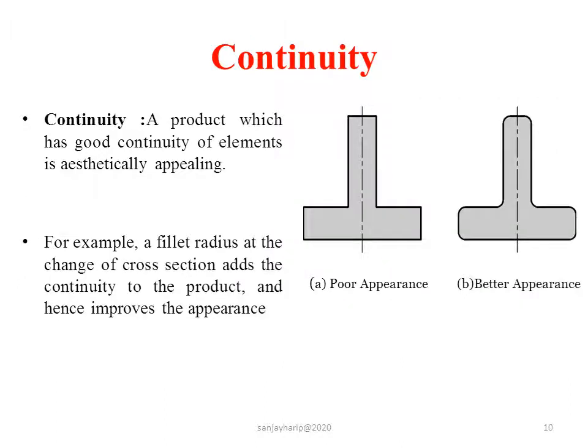Let us see another feature of aesthetics — that is continuity. Good continuity is appealing, as shown in the figure. If we add a fillet at the change of cross-section, it adds continuity to the product and improves its appearance, as shown in figure B. Therefore, figure B appears better than figure A.